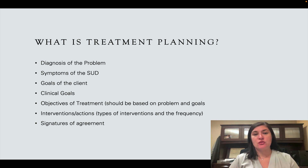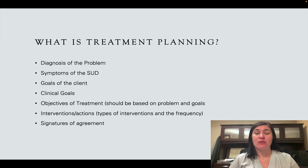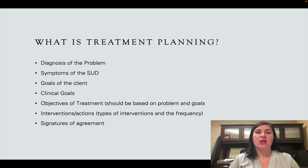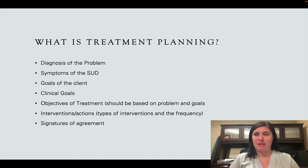For example: we would like them to take ownership for their alcoholism by going through the first three steps of the 12 steps; we would like them to participate in DBT for six months to show commitment to their treatment; we would like them to have a reduction in hallucinations — something measurable and specific.